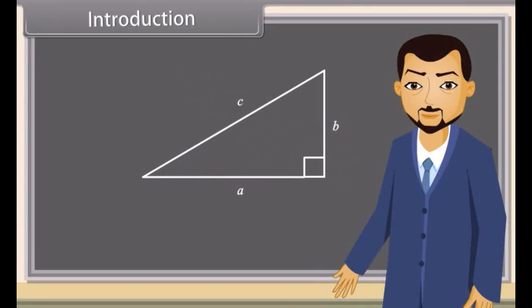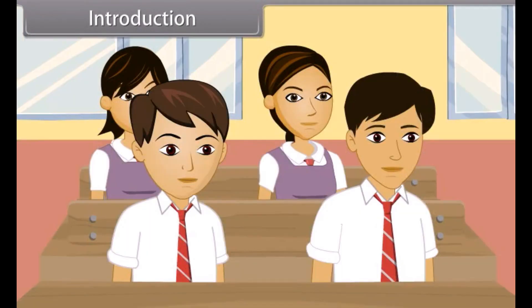Students, this is a right-angled triangle. Can you tell which side is the hypotenuse? C! C is the hypotenuse.